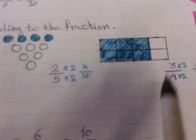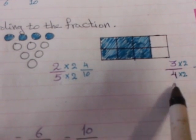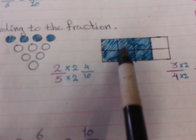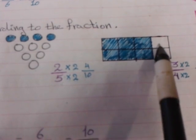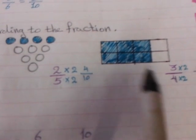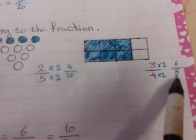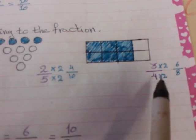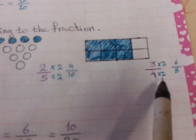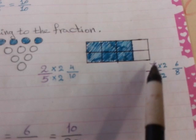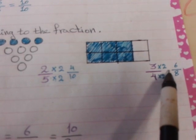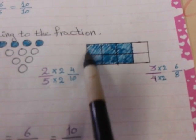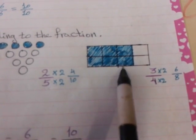Here we have 3 over 4, or 3 quarters. How many parts in this shape? 1, 2, 3, 4, 5, 6, 7, 8. The denominator will be 8. How do we convert 4 to 8? Multiply by 2. So 4 multiplied by 2 equals 8, and 3 multiplied by 2 equals 6. We will color 6 parts in this shape.